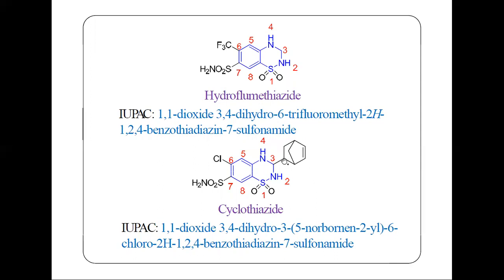Another benzothiadiazine compound is named: 1,1-dioxo, 3,4-dihydro, with a 5-norbornene-2-yl group at position 3, with 6-chloro, 2H-1,2,4-benzothiadiazine-7-sulfonamide.